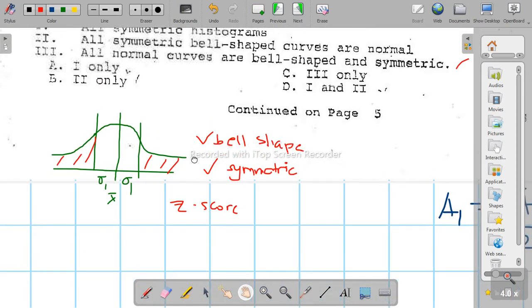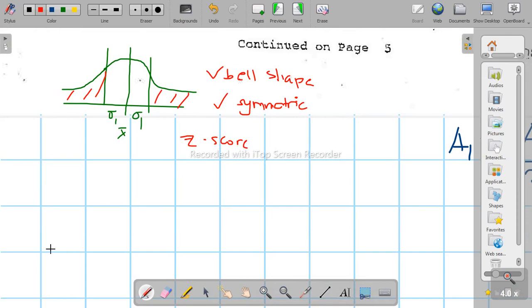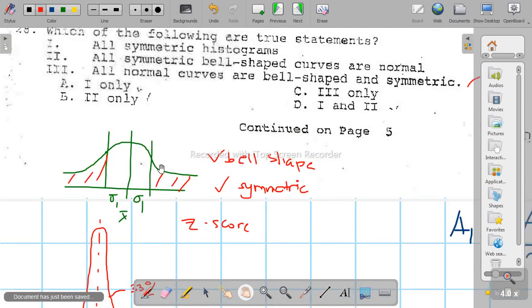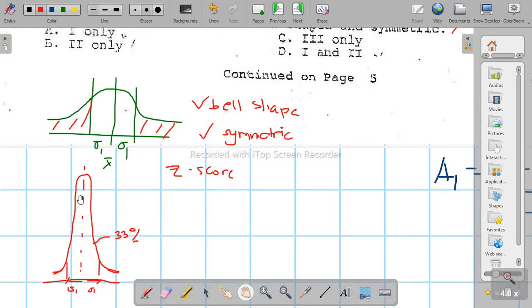Equal distances and areas on both sides. So technically, if it's a normal distribution or normal curve, it's bell-shaped and symmetric. That's why we use the z score. So statement 3 is correct.